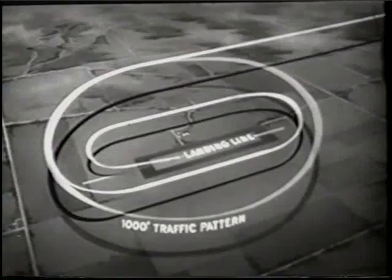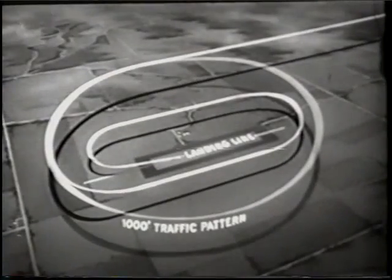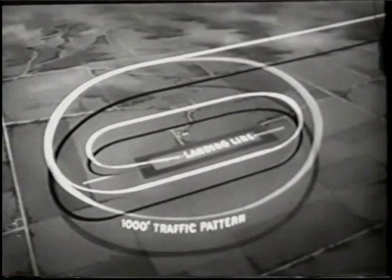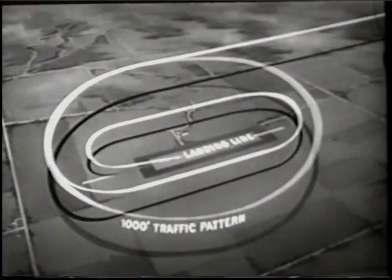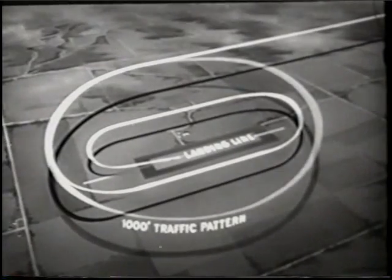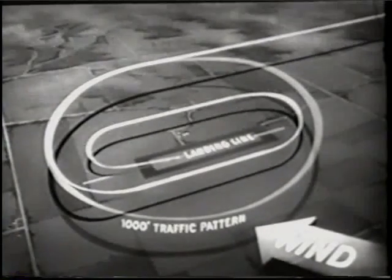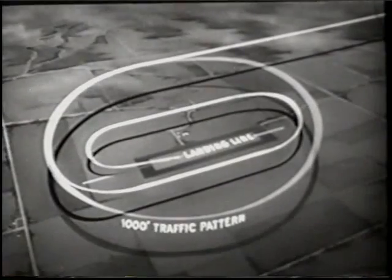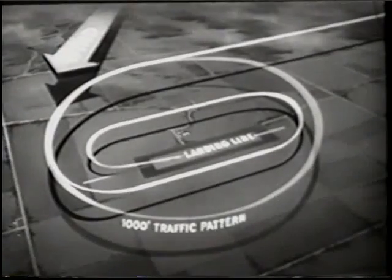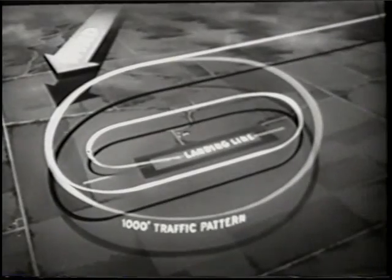A crosswind is determined by the direction in which the wind is blowing across the landing line in relation to the final approach heading. This is a right crosswind. And this is a left crosswind, regardless of the position of your plane in the approach pattern.